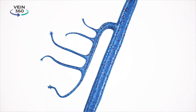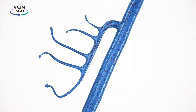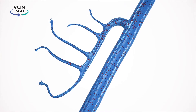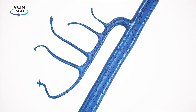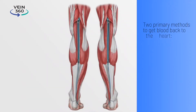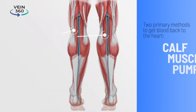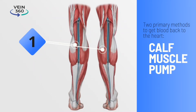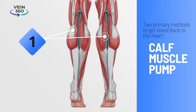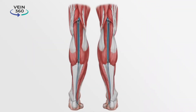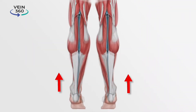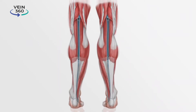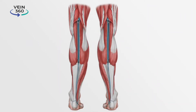In order to understand how venous reflux occurs, we must first understand how normal veins function. Veins have two primary methods to bring blood back to the heart. The first is the calf muscle pump. The large veins in the calf are completely surrounded by muscle. When the muscles contract, they squeeze the vein and push the blood up. This is similar to squeezing a tube of toothpaste.